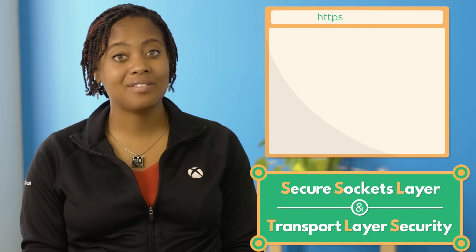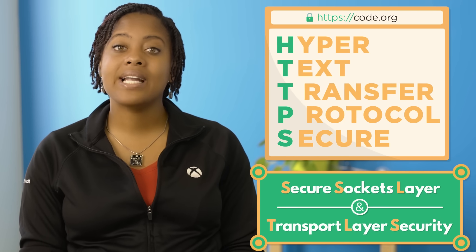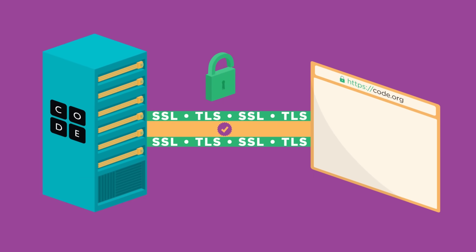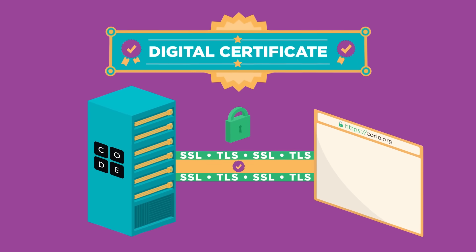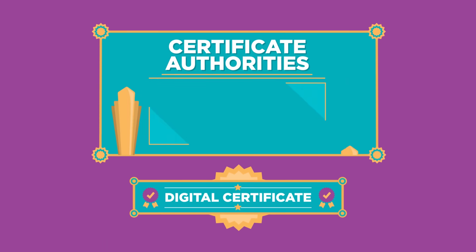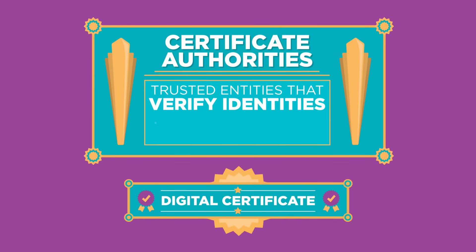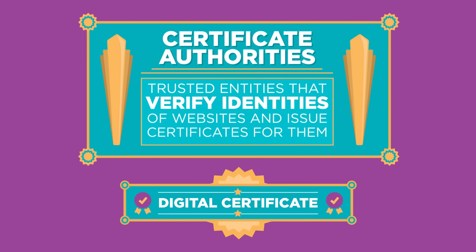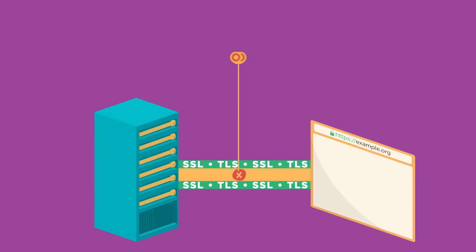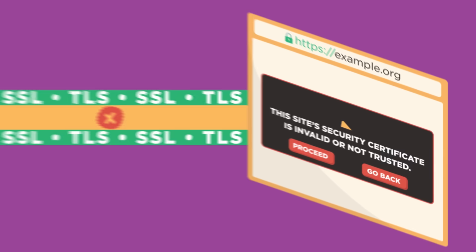SSL and TLS are active when you see the little lock that appears in your browser address bar next to HTTPS. The HTTPS protocols ensure that your HTTP requests are secure and protected. When a website asks your browser to engage in a secure connection, it first provides a digital certificate — like an official ID card — proving that it's the website it claims to be. Digital certificates are published by certificate authorities, trusted entities that verify the identities of websites and issue certificates, just like a government can issue IDs or passports. If a website tries to start a secure connection without a properly issued digital certificate, your browser will warn you.